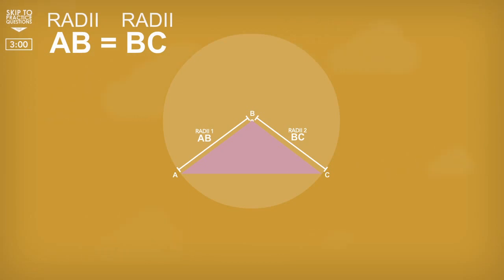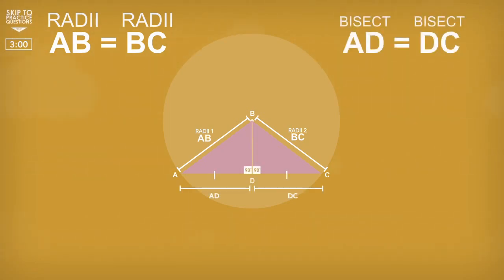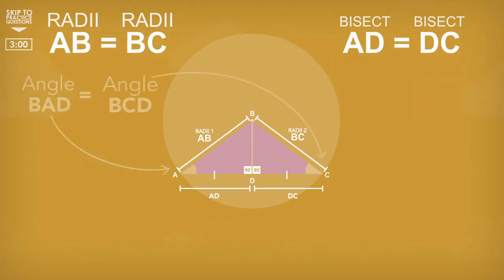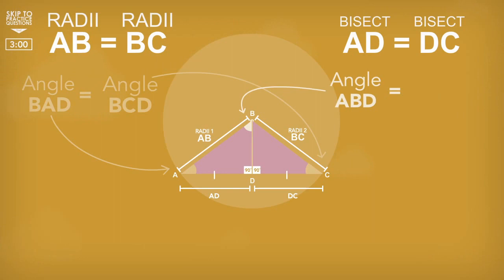Now, if we bring back the perpendicular line, not only have we bisected the chord into two equal lengths, but also the isosceles triangle angle into two right angles with equal lengths and angles. So that means angles BAD and BCD are equal to one another. Also, angle ABD is equal to CBD.